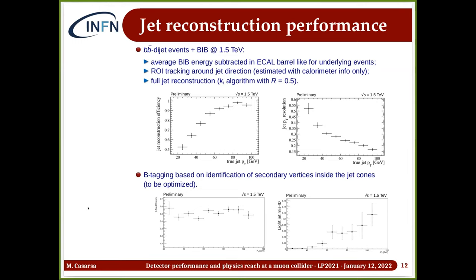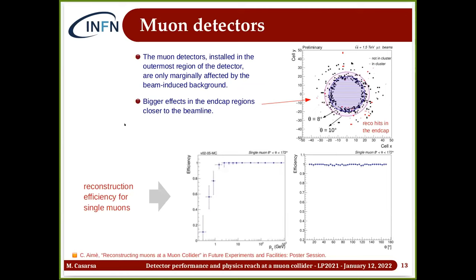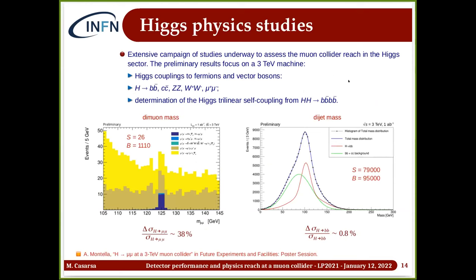Performance assessed on a di-bb sample shows very good efficiency for pT above ~60-70 GeV with very good resolution. B-tagging performance studies, reconstructing and identifying vertices in jet cones, show preliminary results of 50% efficiency on real B-jets and ~10% misidentification for high-energy jets. Muon detectors in the outermost part of the detector are minimally affected by beam-induced background, with very high efficiencies and only minor effects in the endcaps near the beam pipe.